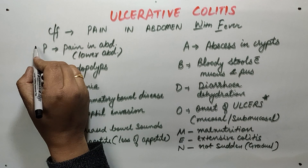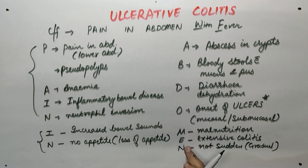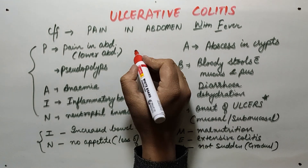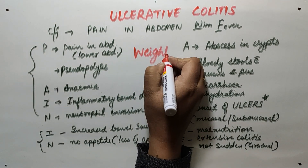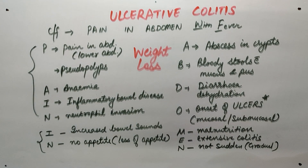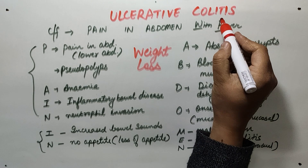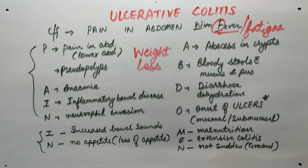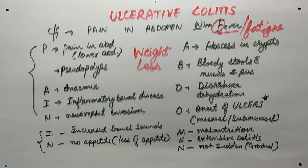W stands for weight loss, because of anemia and bleeding. F stands for fever and fatigue. Thus, the symptoms of ulcerative colitis are summed up in this mnemonic: 'pain in abdomen with fever' — or fatigue, as you wish. Hope it helps you.